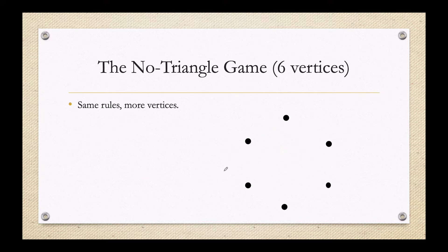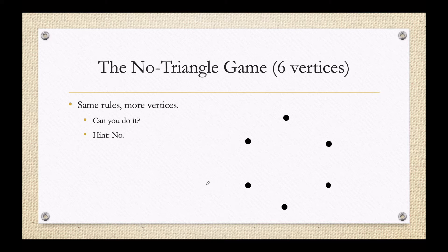What about six vertices? Same rules, more vertices — but don't spend too much time trying to find a solution, because I think what you'll find is it's impossible. It seems so easy with four vertices and five vertices, so why is it impossible on six? Well, it turns out with six vertices, I can prove to you that you can't do it. The proof uses what's called the pigeonhole principle: you pick a vertex — it doesn't matter which one — pick whichever is your favorite.